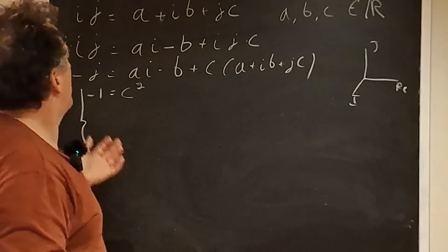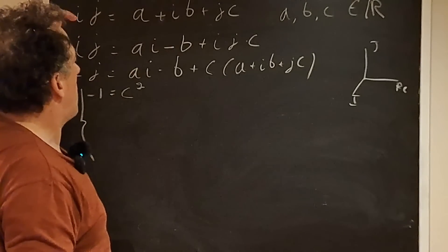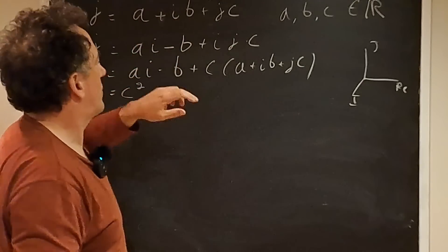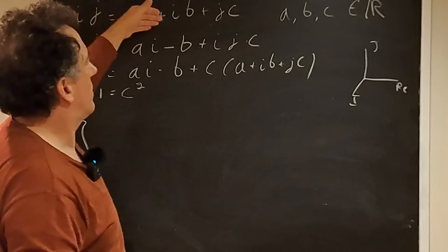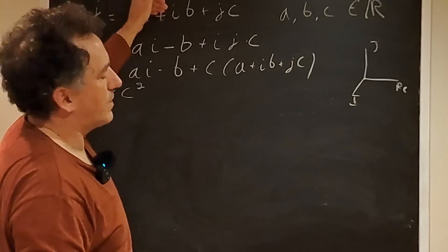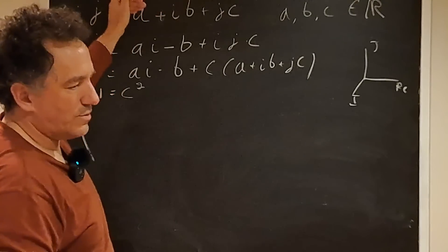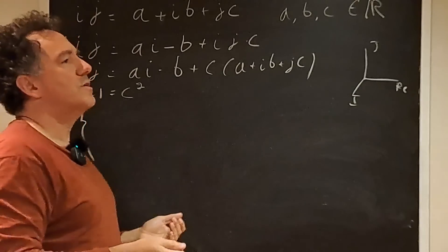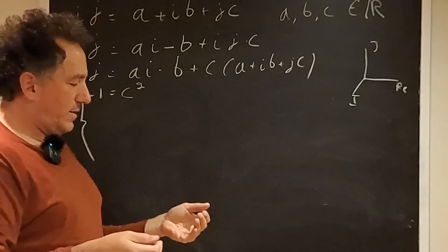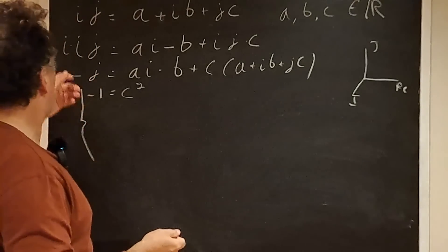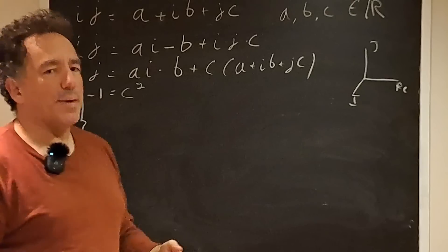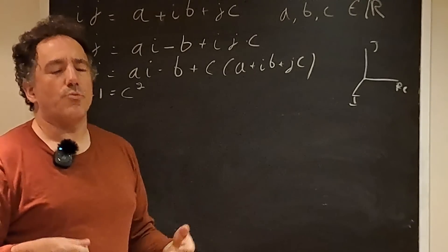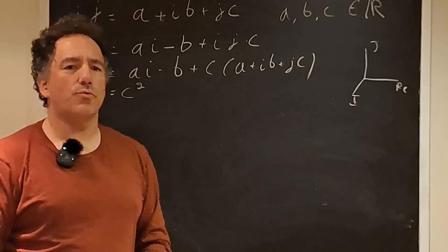So basically, the reason why we cannot have numbers of the form a + i·b + j·c, with i² = j² = -1, that behave like complex numbers but in three dimensions, is because we cannot reasonably define the product i·j while keeping the properties we want these numbers to have so that we can actually use them. And that's it for today.